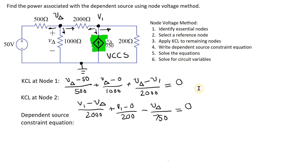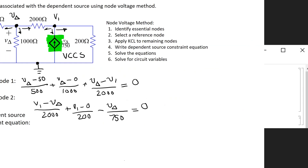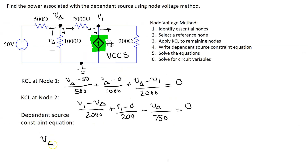Looking at these equations, we have two variables and two unknowns, so we can easily solve them. We use the solve command in Mathematica to solve these equations. The solution is V_delta equals 30 volts and V1 equals 10 volts. Now we need to solve for the circuit variables — in this case the power associated with the dependent source.